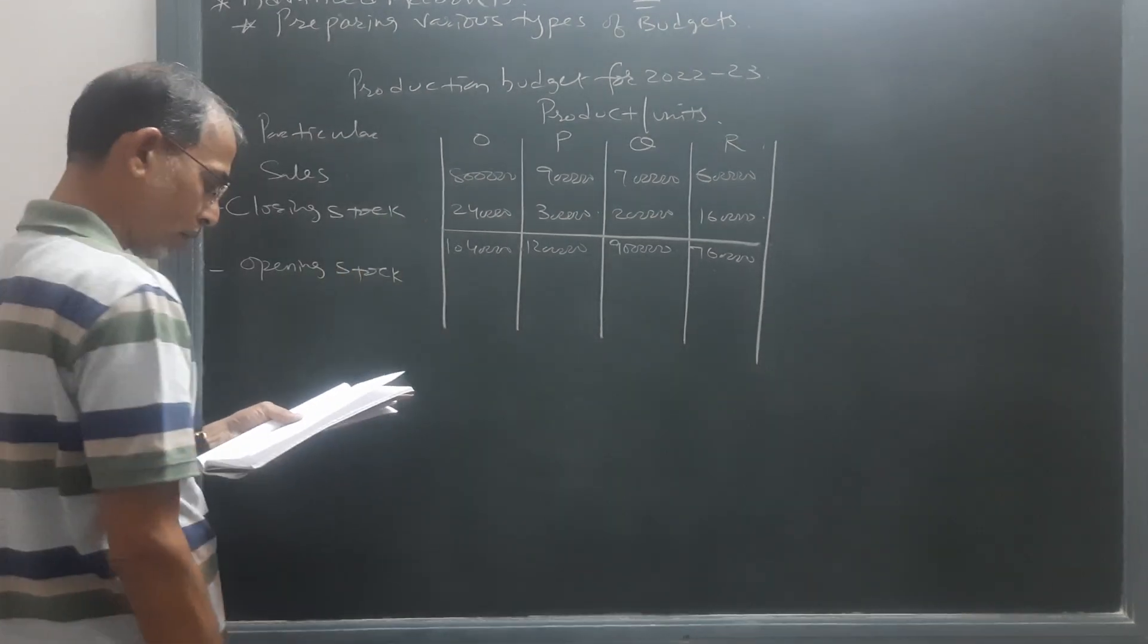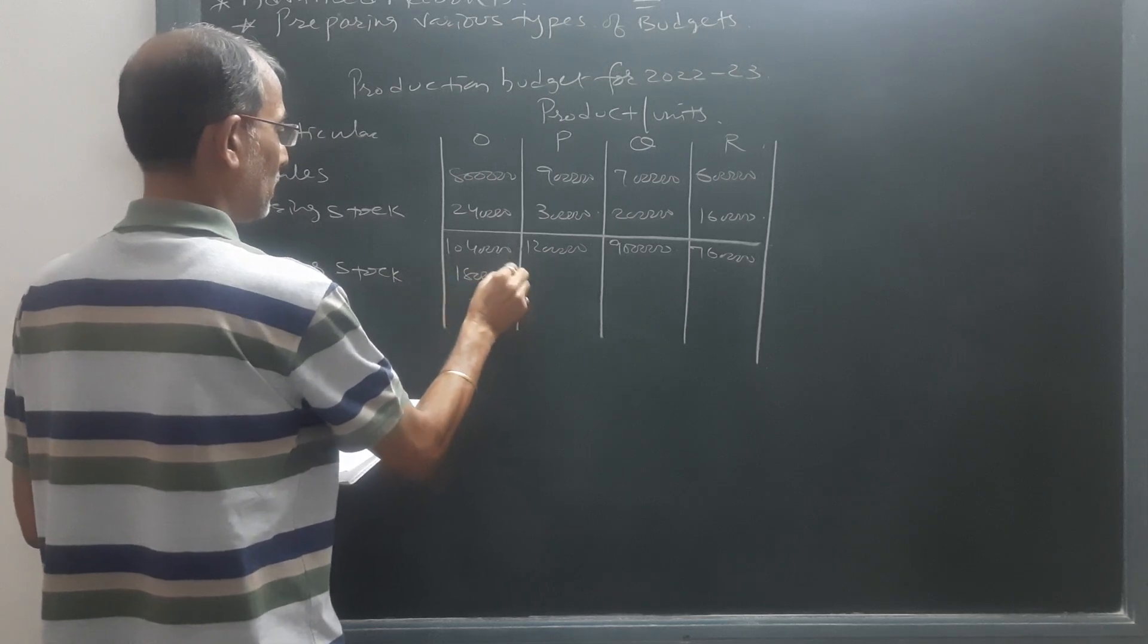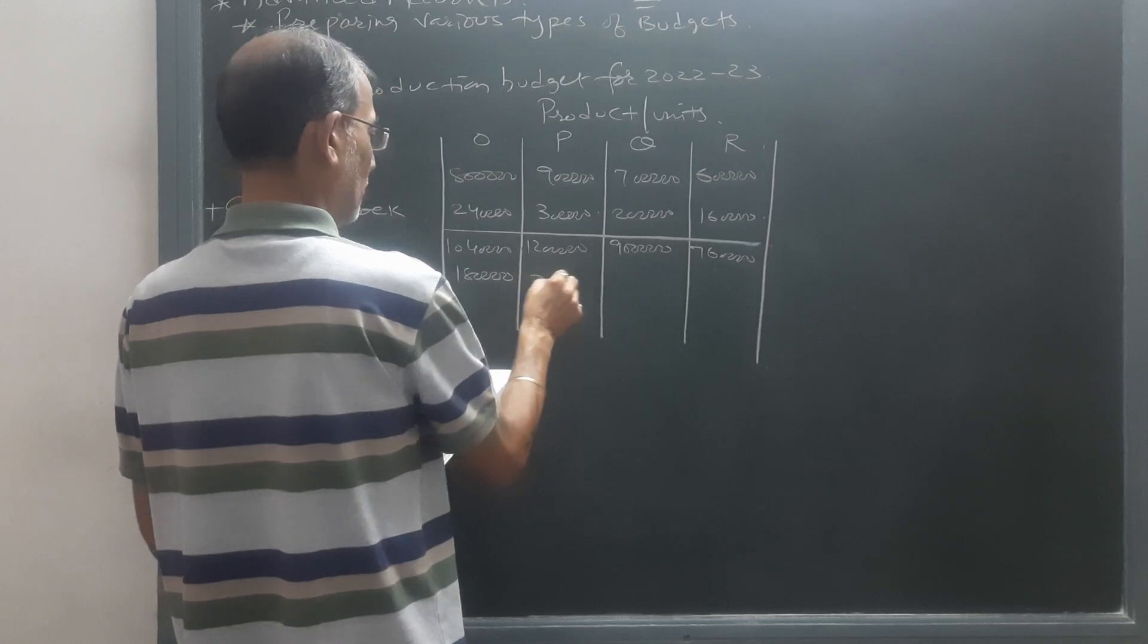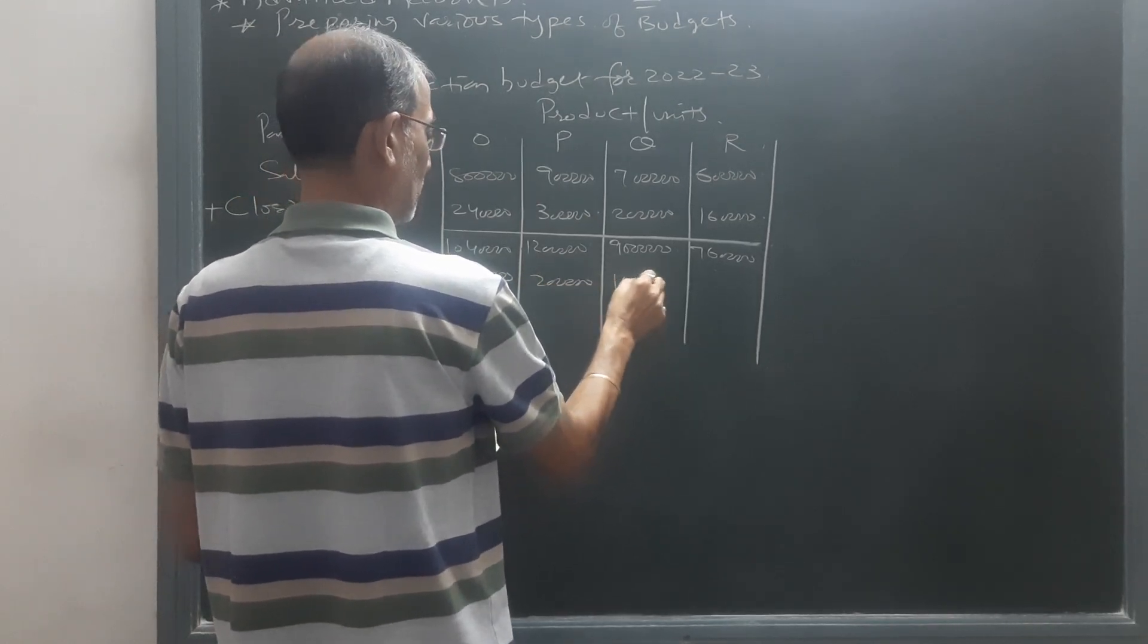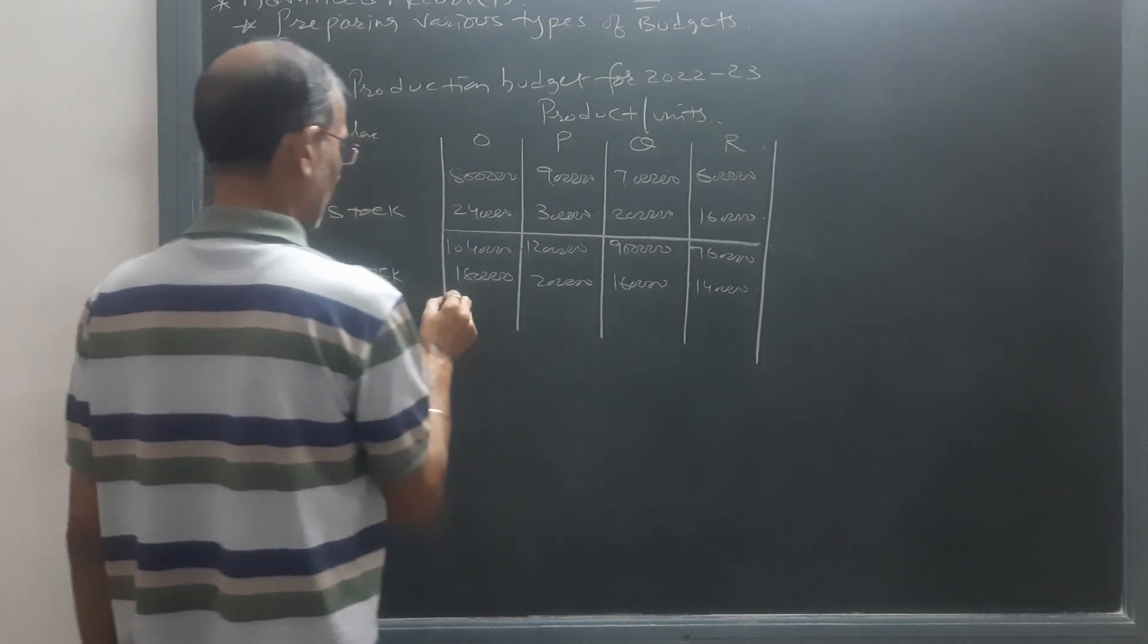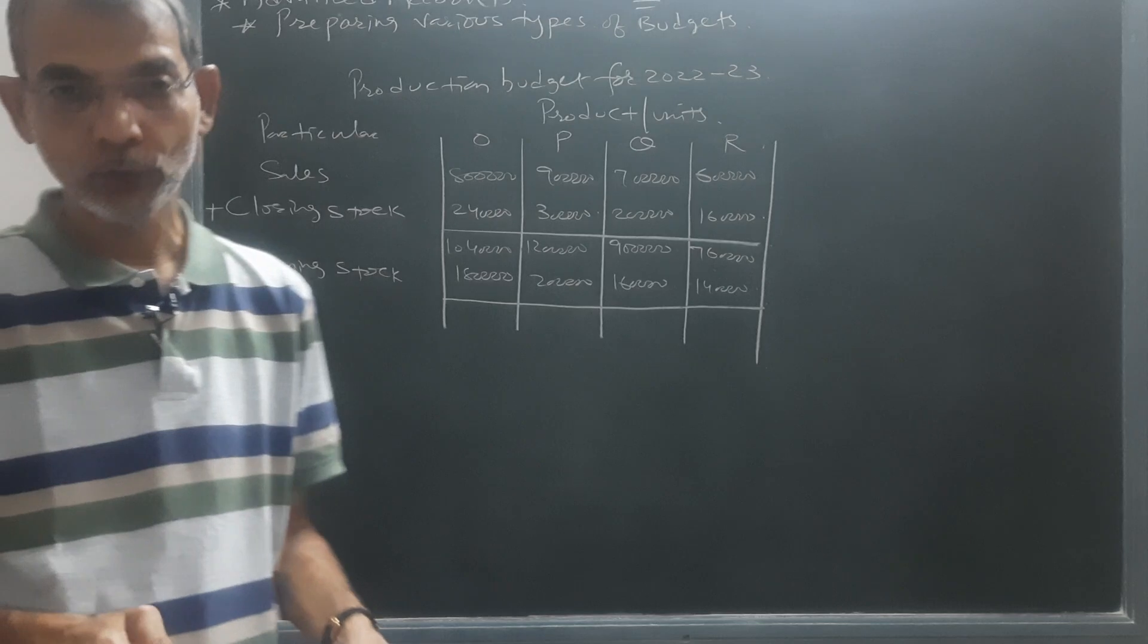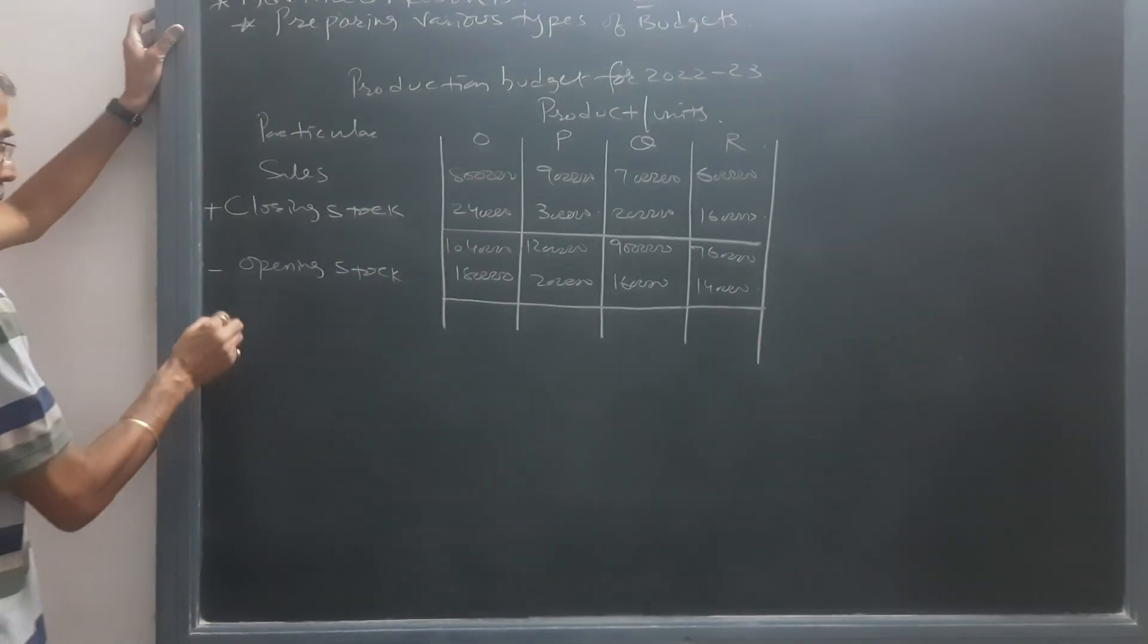Opening stock for O is 1 lakh 80 thousand, for P that is 2 lakh, for Q that is 1 lakh 60 thousand, and for R that is 1 lakh 40 thousand. So subtracting these opening stock values, we will come to know the required production of each and every product.